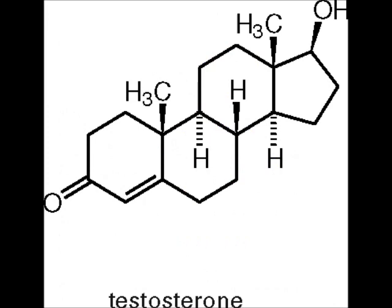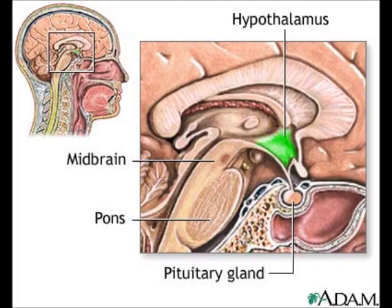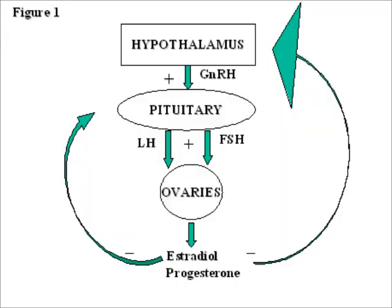In human males, androgens, chiefly testosterone, from the testes cause the development of primary and secondary sex characteristics. Androgen secretion and sperm production are both controlled by hypothalamic and pituitary hormones.